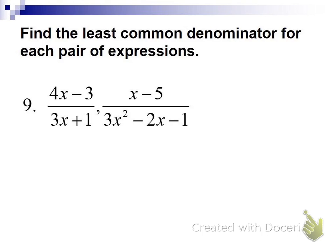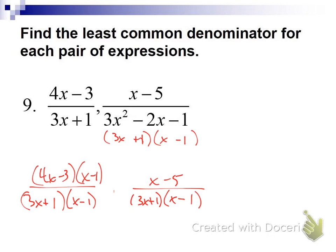For number 9, factor both denominators completely, then put together what they have in common along with what they don't. The second denominator factors into (3x + 1)(x − 1). They have (3x + 1) in common but not (x − 1), so the LCD is (3x + 1)(x − 1). The first fraction was missing (x − 1), so multiply (4x − 3) by (x − 1). The second fraction wasn't missing anything, so leave the (x − 5) numerator alone.